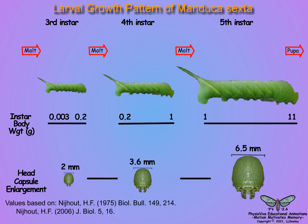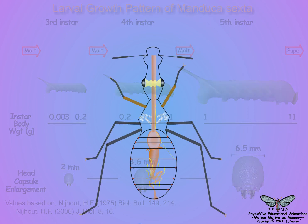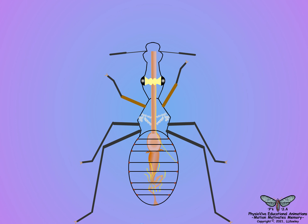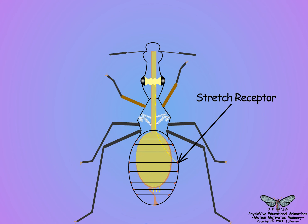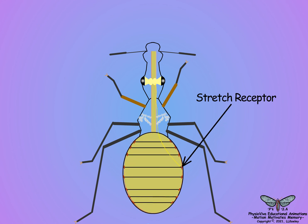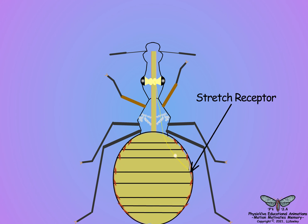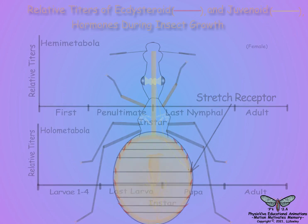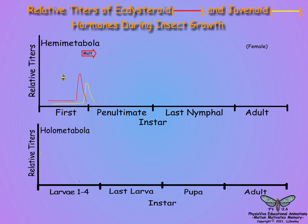Insects may monitor food consumption as a means to regulate molting. In hemimetabolous species, the onset of molting is stimulated by stretch receptors in the intersegmental muscles of the body wall. When a large meal is consumed, so that growth of the next instar will be sufficient, the stretch receptors notify the brain to release prothoracicotropic hormone, which stimulates ecdysone production by the prothoracic glands and increases ecdysteroids to initiate molting.